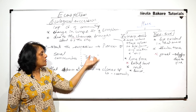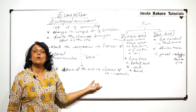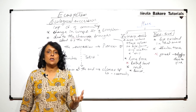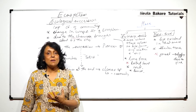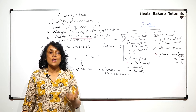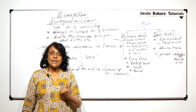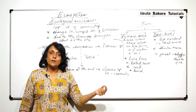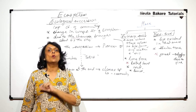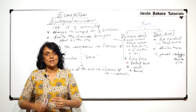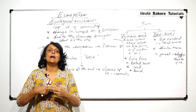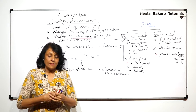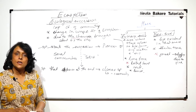This is how succession takes place. One species brings about changes that become unsuitable for themselves but more suitable for the next species, and that is how each is replaced by the next. This is what succession is.